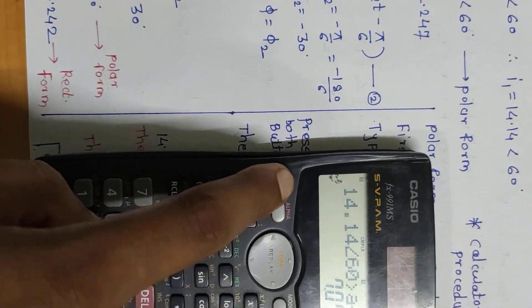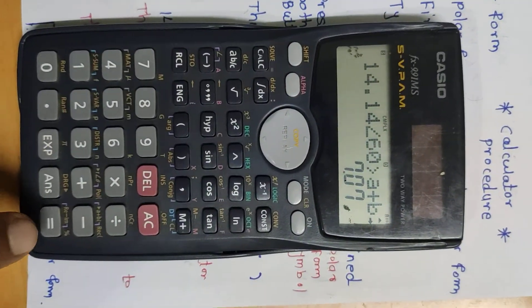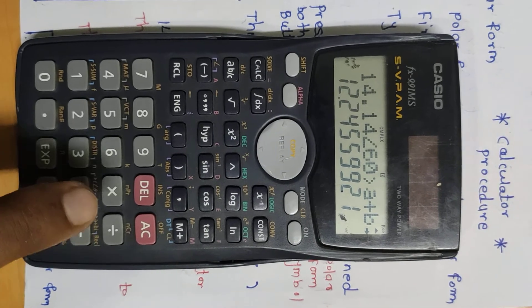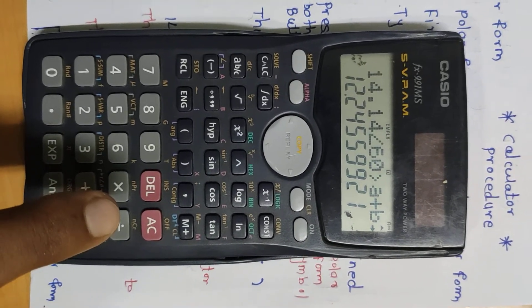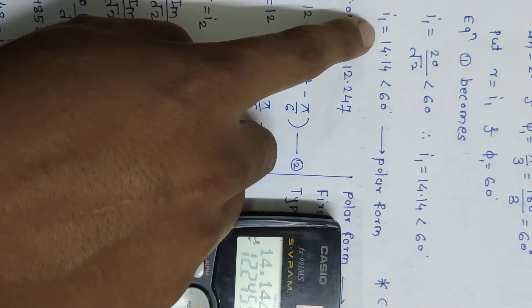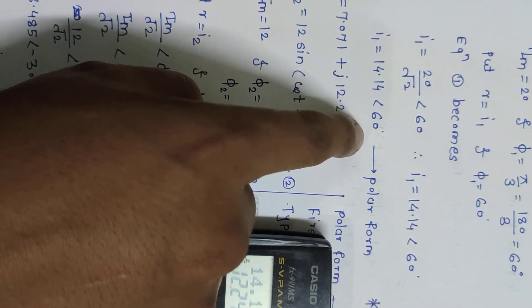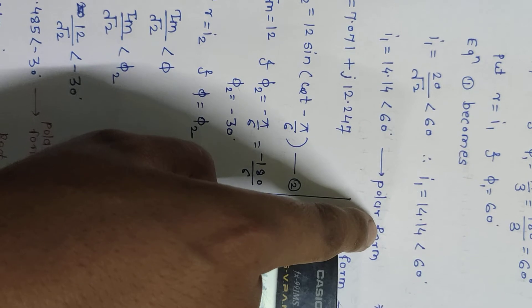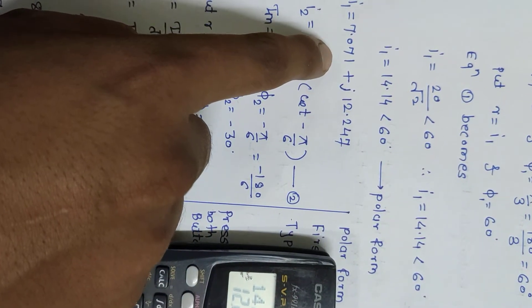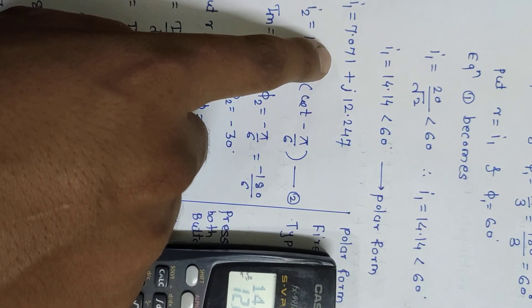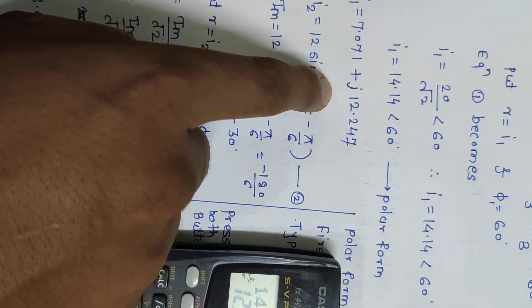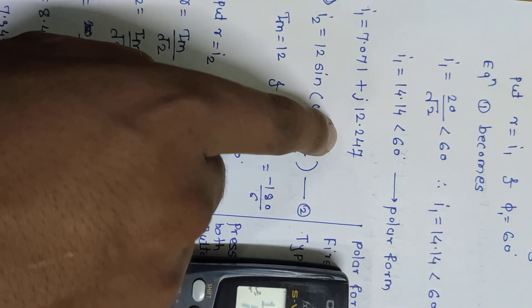Press shift and equals for more precision - that gives 12.245. So i1 = 14.14 < 60° is the polar form, and i1 = 7.07 + j12.247 is the rectangular form.